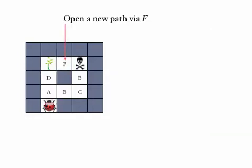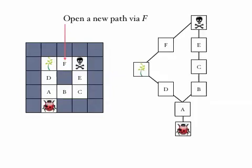Now let's suppose we open up a new path via F that travels between the room containing the tree and the room in the maze containing the skull and crossbones. We can represent this now by adding an extra node to our tree, F, and arcs from F to the tree and F to the skull and crossbones.